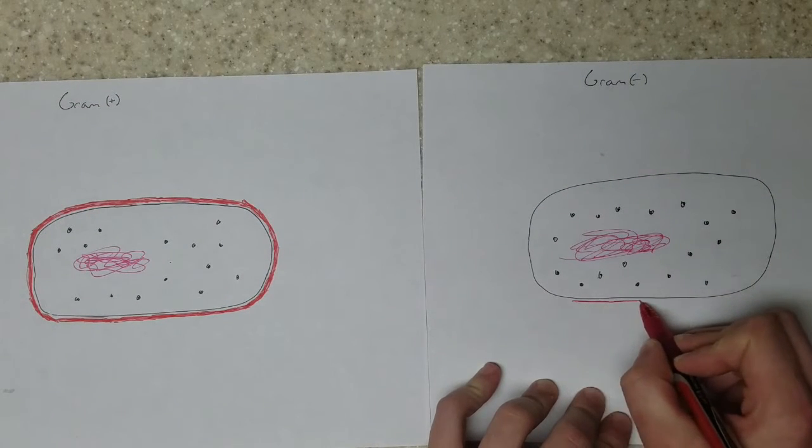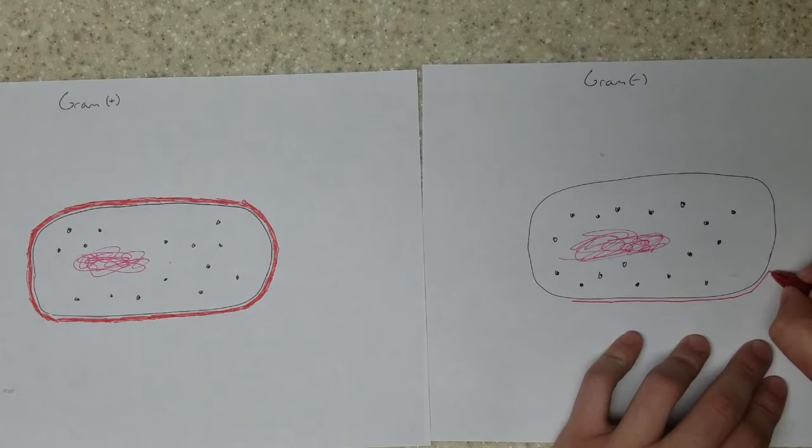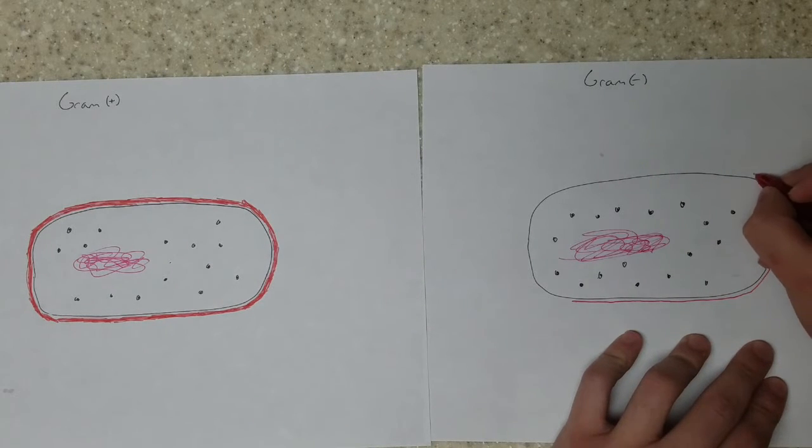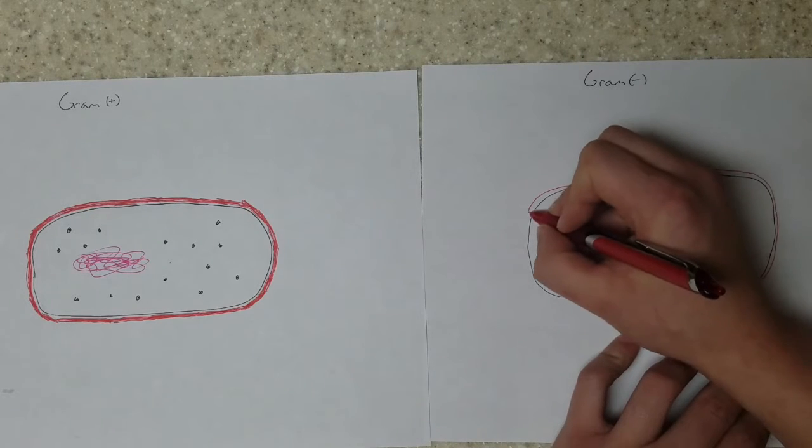While the gram-negative cell, which has a thinner cell wall, as you can see me drawing right now, all the stain has leaked out. So gram-negative cells are pink when stained with crystal violet.